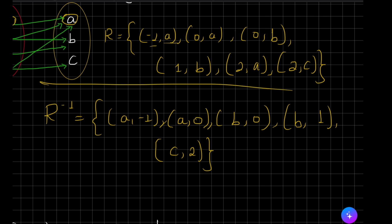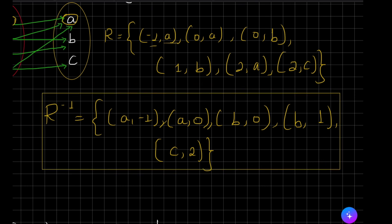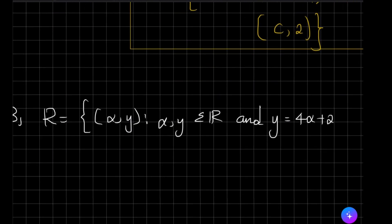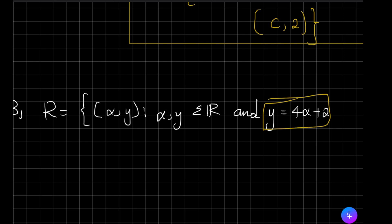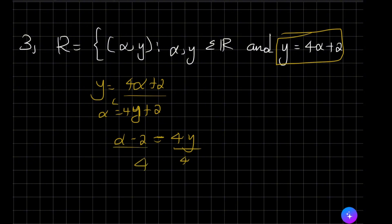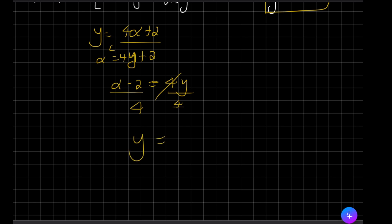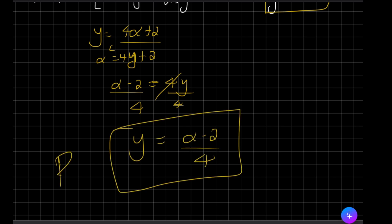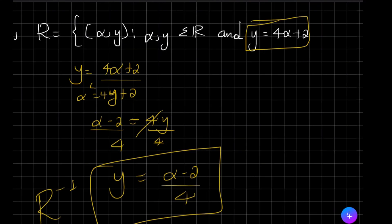For number three, we exchange the place of x and y. Given y equals 4x plus 2, we write x equals 4y plus 2. Then solving for y: x minus 2 equals 4y, dividing by 4 gives y equals (x minus 2) over 4. This is the inverse relation of y = 4x + 2.